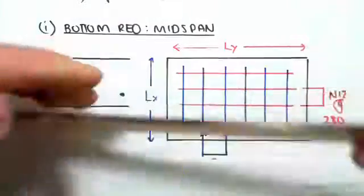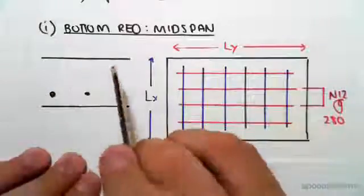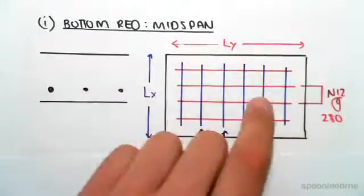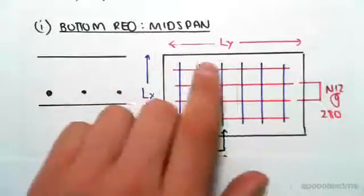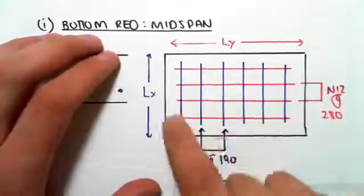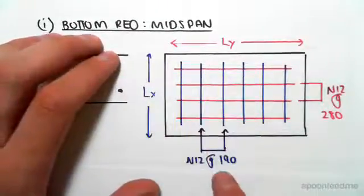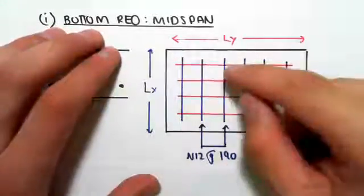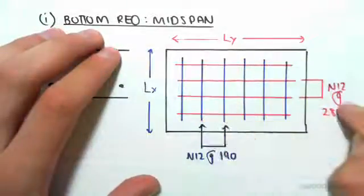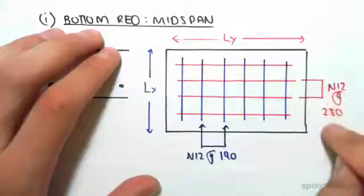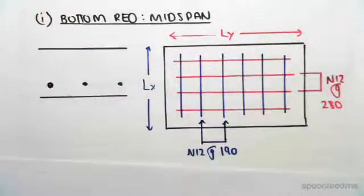We saw that the diagram would look something like this: spanning the lx, that spacing would be N12 at 190 mils, and spanning the ly direction, that spacing would be N12 at 280 mils. We saw that in the previous videos.